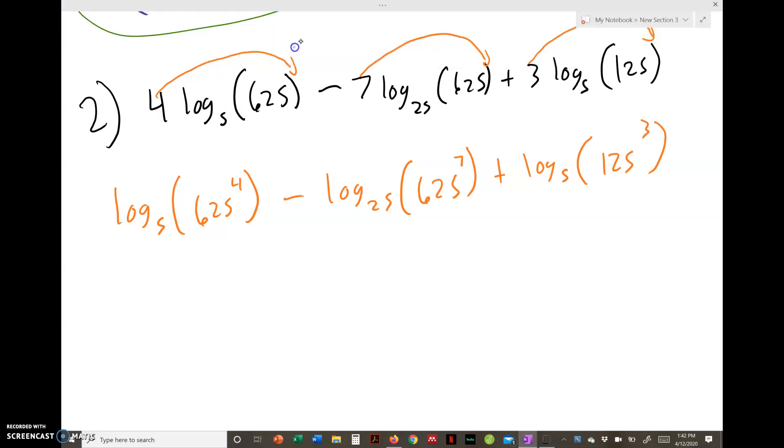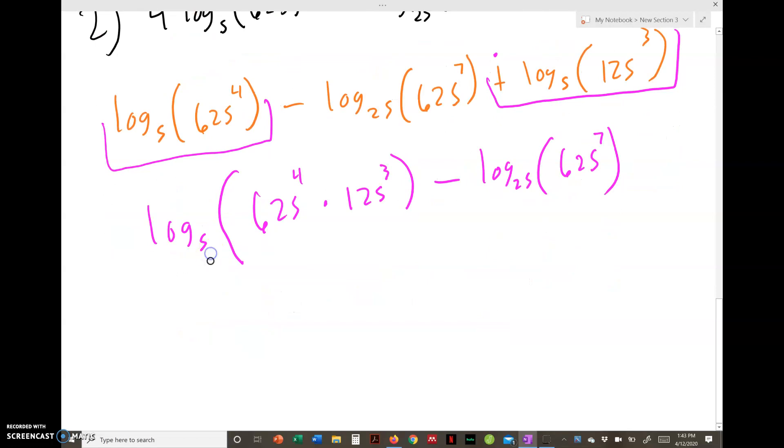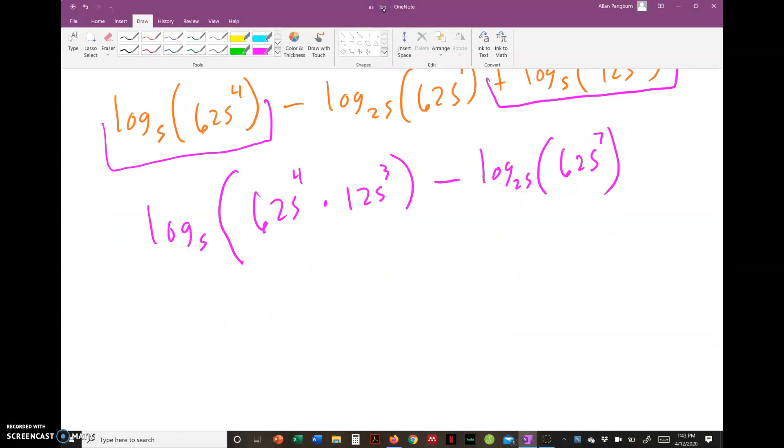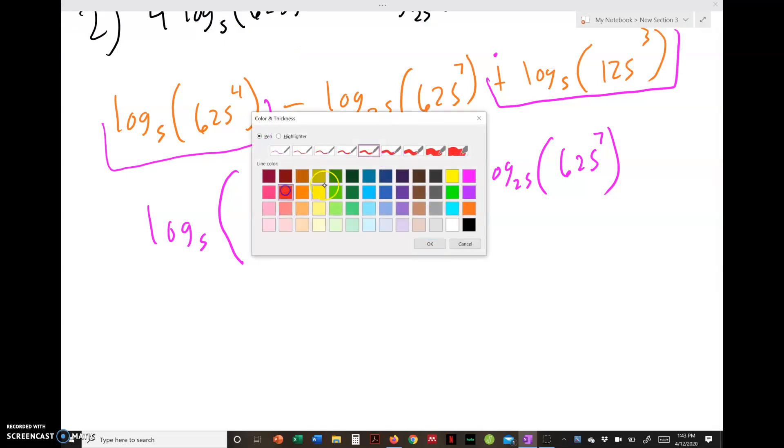So first these coefficients become exponents. So log base 5 of 625^4, minus log base 25 of 625^7, plus log base 5 of 125^3. Since there is no add, subtract, or multiply, we can just write it next to the number. Now we see we have log base 5 plus log base 5. Same base adding, that means multiply. So this is log base 5 of (625^4 × 125^3) minus log base 25 of 625^7.